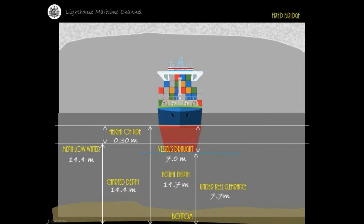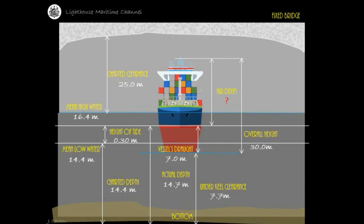From the chart title information of the locality: mean high water is equal to 16.4 meters. Charted clearance is equal to 25.0 meters. Overall height, measured from the highest point of the vessel to the keel, is equal to 30.0 meters — obtained from the ship's particulars or construction details. You are required to calculate for the air draft, actual clearance, the difference between mean high water and actual depth, and the actual vertical clearance to determine that your vessel meets vertical limit requirements.